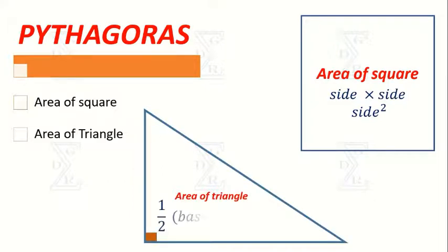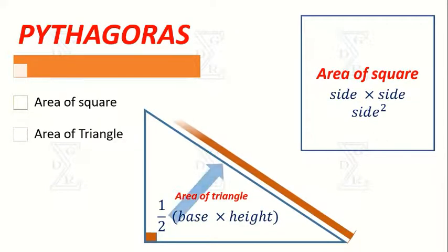Note that the side opposite to 90 degrees in a right-angled triangle is the hypotenuse, and it is the longest side in the right-angled triangle.